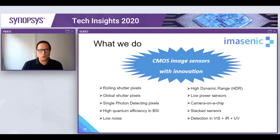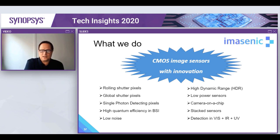From a technical point of view, we can draw from a growing list of IP that we have developed, which includes rolling and global shutter pixels, high dynamic range pixels, our low-noise readout chain which includes a configurable and scalable sigma-delta ADC, and we can do all the on-chip digital control and data processing. When needed, we can also draw from our active network of partners to offer BSI stacked sensors, and we are not limiting ourselves to the visible spectrum — we can also offer infrared or UV support for our customers.